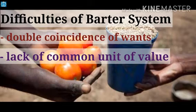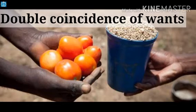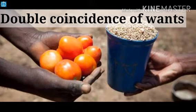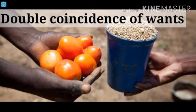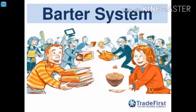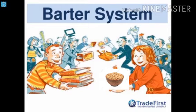The first difficulty is double coincidence of wants. This system requires a double coincidence of wants where a seller has to find someone who wants to buy what he has, and the buyer must also have what the seller wants. For example, if a seller wants to buy a book and he has wheat, finding someone who wants to buy wheat and also has books to exchange was very difficult during this barter economy.